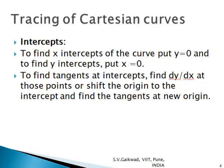After studying the origin, check if the curve has any intercepts with the two axes. To find the x-intercept, put y = 0; to find the y-intercept, put x = 0. To find the tangent at these intercepts, find dy/dx at those points, or shift the origin to the intercept. That intercept becomes the new origin, and we find the tangent at the new origin by equating the lowest degree term to zero.